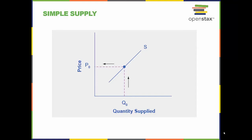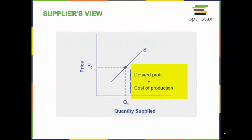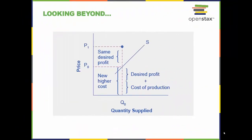The concept of ceteris paribus applies to the supply curve as well. This means that holding all other factors equal, a change in price only impacts the quantity supplied along the same supply curve. The cost of production and the desired profit equal the price a firm will set for a product. If we change other factors related to the firm's cost of production or the desired profit, then the supply curve shifts.